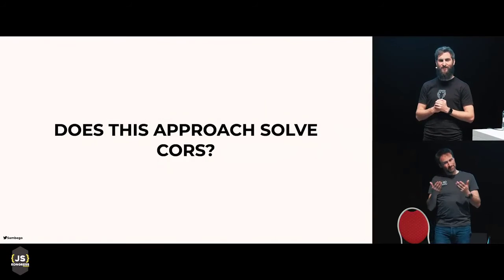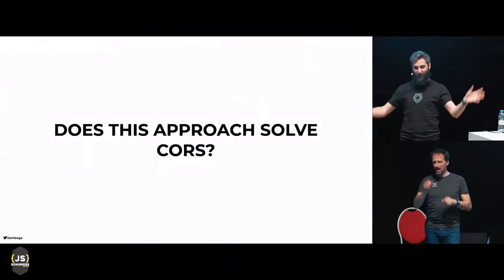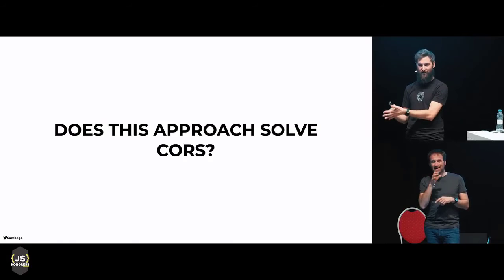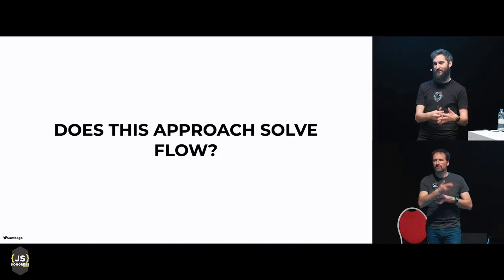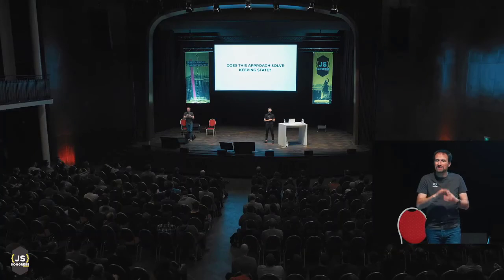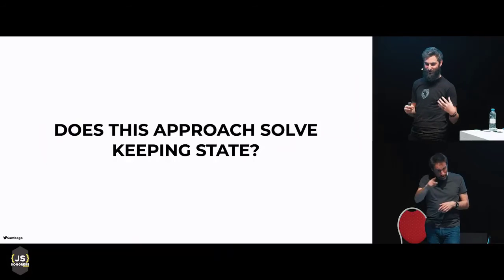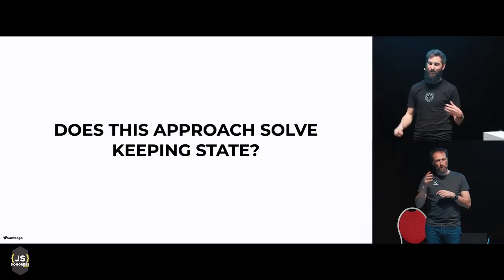So does this approach solve CORS? It does, because you can pass tokens to any other origin you want — as long as you know the secret or key to verify its signature. Does it solve flow? It does, because you can pass along these tokens to any other server or service, as long as that server knows the key or secret to verify the signature. Does it solve keeping state? That's a bit trickier — in theory JSON Web Tokens should solve state, but in practice you end up needing a blacklist for revoked tokens, or you need a session cookie to re-issue tokens on each visit. So in theory it solves state, but in practice it does not fully.